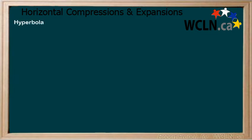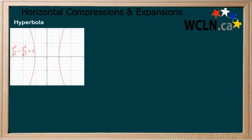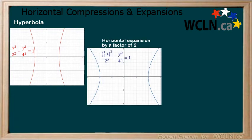Next, we will look at a hyperbola. Here is both the equation and graph of a hyperbola. Now apply a horizontal expansion by a factor of 2. To do this, we multiply x by 1 over 2. We can see how the graph of the hyperbola changes as well.